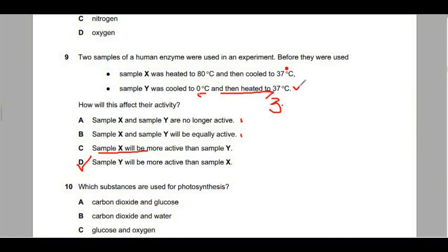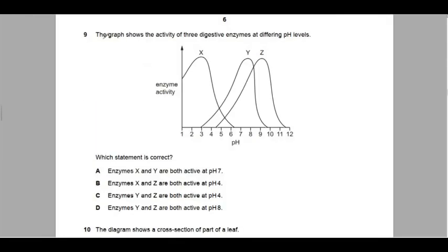Sample Y will be more active than sample X is correct because we can see that sample Y was cooled down to zero degrees but then heated back to 37 degrees, which of course is the optimum temperature for enzyme-controlled reactions in the human body.